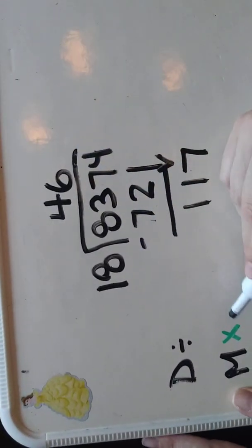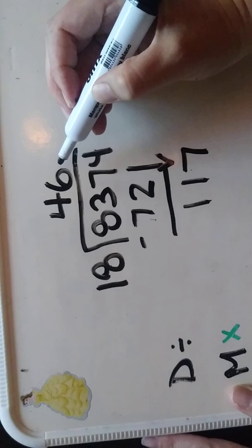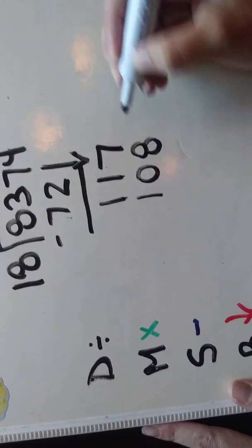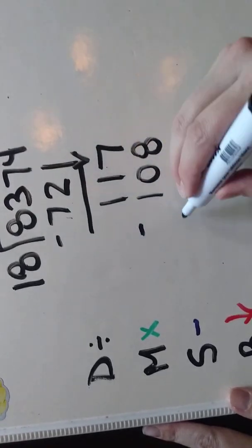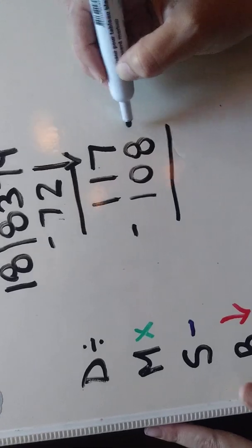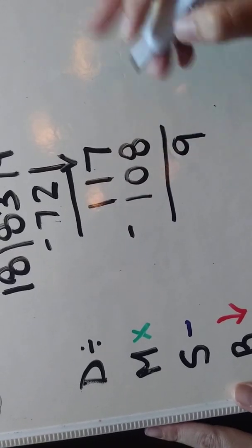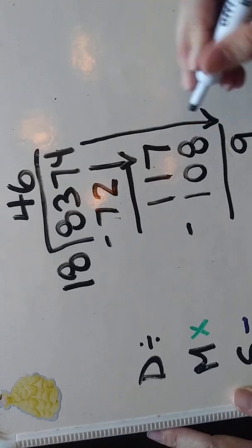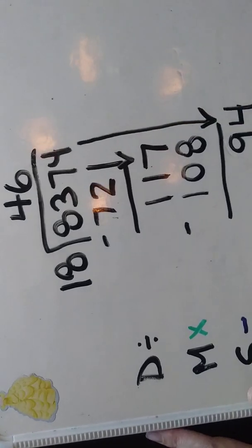And then go on with my next step multiplication. 18 times 6 is 108. Then do my subtraction. 117 minus 108 is 9. And then I'm going to bring down my last number 4 and start all over again.